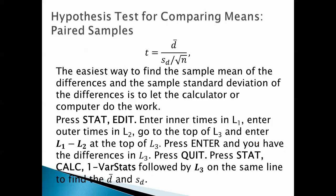The easiest way to find the sample mean of the differences or the sample standard deviation of the differences is to let the calculator or the computer do the work. So we press STAT and then EDIT. Enter the inner times in L1, the outer times in L2. Go to the top of L3 and enter L1 minus L2 at the top of L3. Press ENTER. You have the differences in L3. Press QUIT. And then press STAT. Calc 1 variable STATs followed by L3 on the same line to find D bar and S sub D.